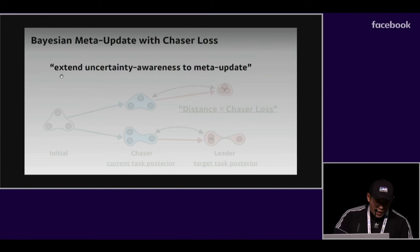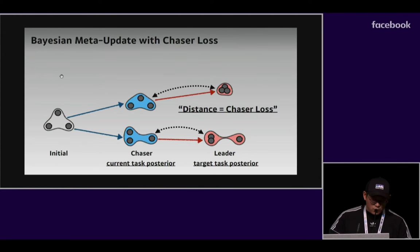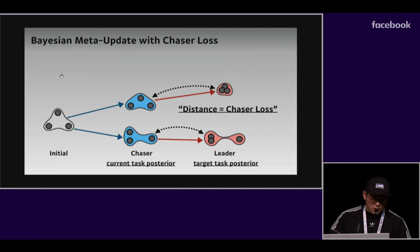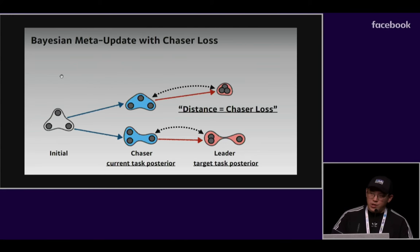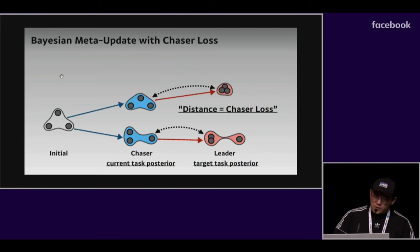Therefore, our second contribution is to extend uncertainty awareness to meta-update. To do this, we propose a new meta-loss called Chaser Loss. We update the initial particles in such a way as to reduce the distance between Chaser and leader particles. Here, the leader particles converge to a posterior instead of a fixed point, and this prevents overfitting.